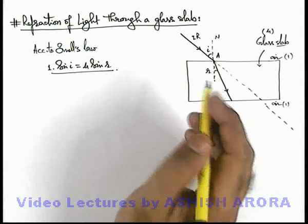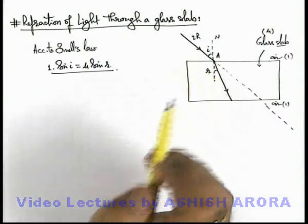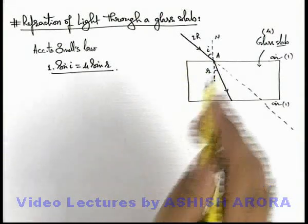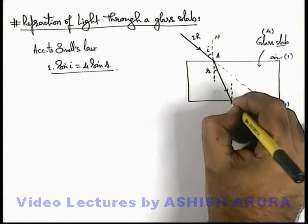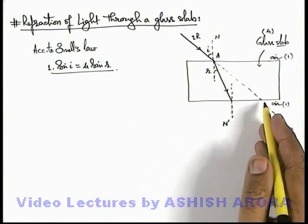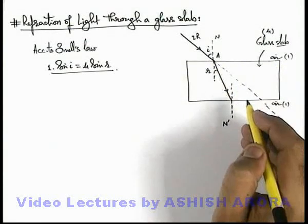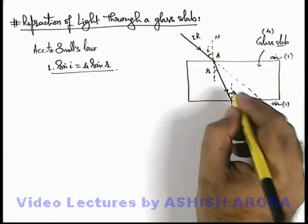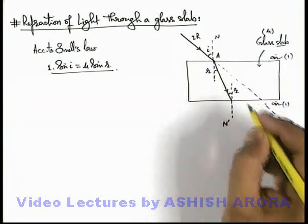This is the relation we use for relating incidence and refraction angle. Here we can see there is another normal N' at the other boundary, and as the two surfaces of glass slab are parallel, the angle of incidence on the other boundary would be equal to r.